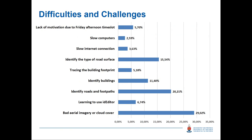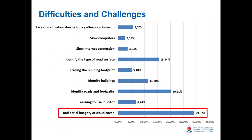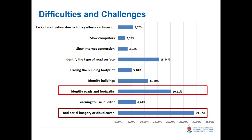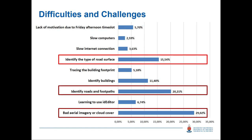To make mapathons easier and smoother for future organizers and attract more users, we asked participants what they found difficult so we could try to alleviate those issues. We unfortunately host a lot of mapathons on Friday afternoons — that was the only time we had free. The biggest trend was that students found bad aerial imagery or cloud cover to be their biggest problem, which then led to having difficulty identifying roads and footpaths, which also led to problems identifying the type of road surface. These were the three biggest problems.